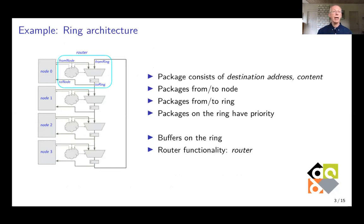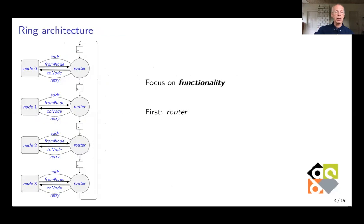Let's turn to the example that Steve already introduced, a ring architecture. The packages travel over a ring from one node to the other and they consist of a destination address and some content. And it's good to know packages on the ring have priority, so sometimes a package coming from the node has to wait. And of course there are buffers on the ring, but let's focus on the functionality and make a little bit more abstract picture of this ring network where the router only is recognizable as some function.